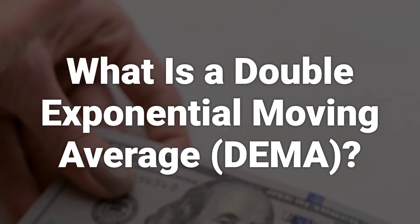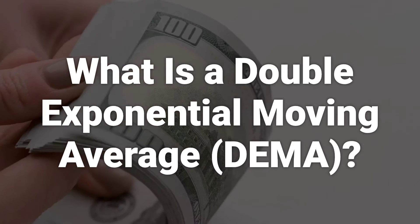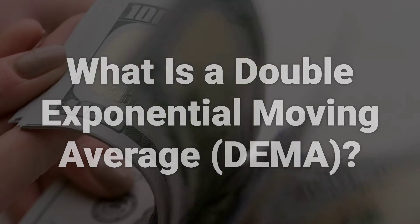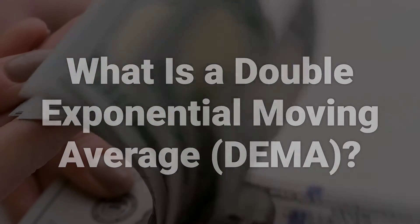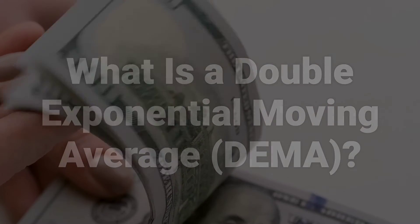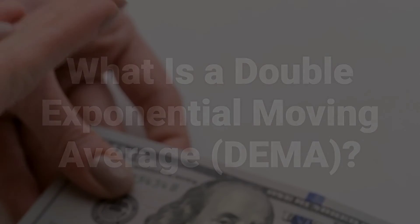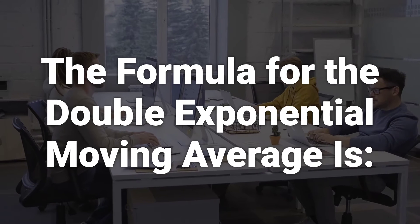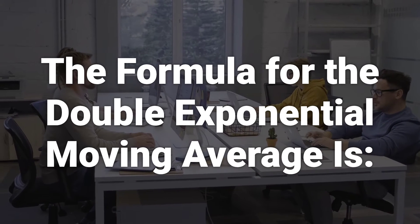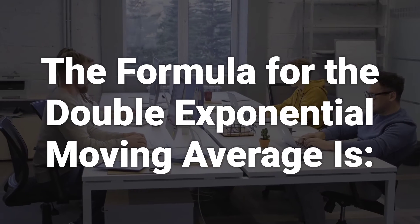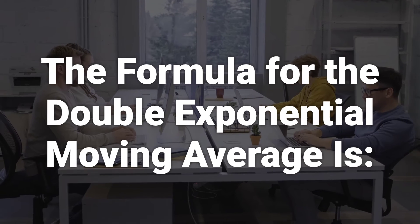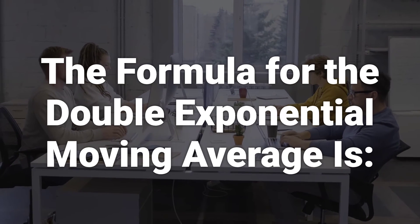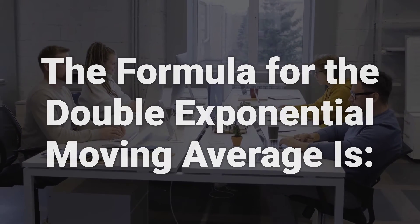The DEMA uses two Exponential Moving Averages, EMAs, to eliminate lag in the charts and was introduced by Patrick Malloy in a 1994 article. The formula for the Double Exponential Moving Average is: DEMA equals 2 times EMA_N minus the EMA of EMA_N, where N represents the look-back period.